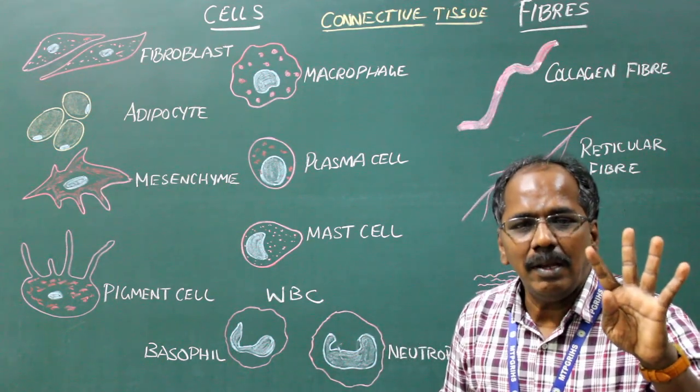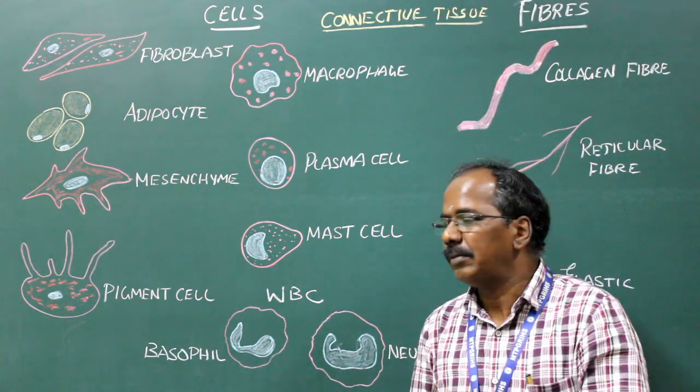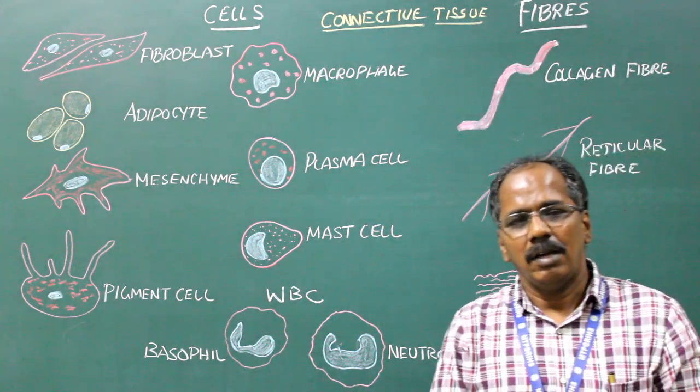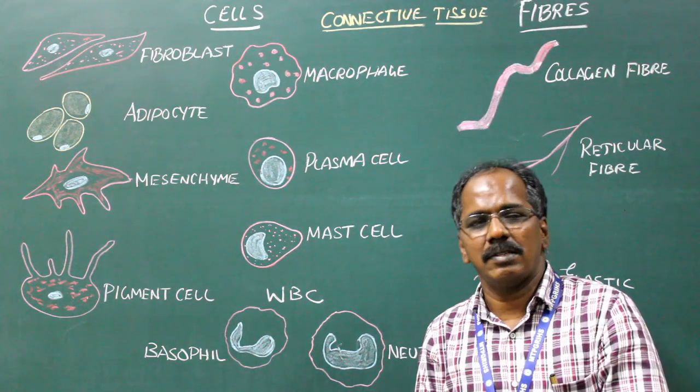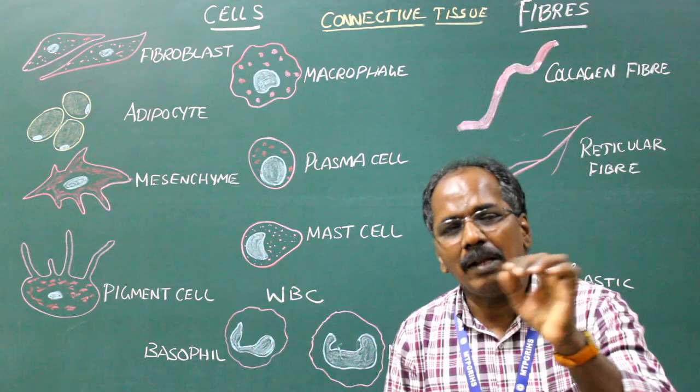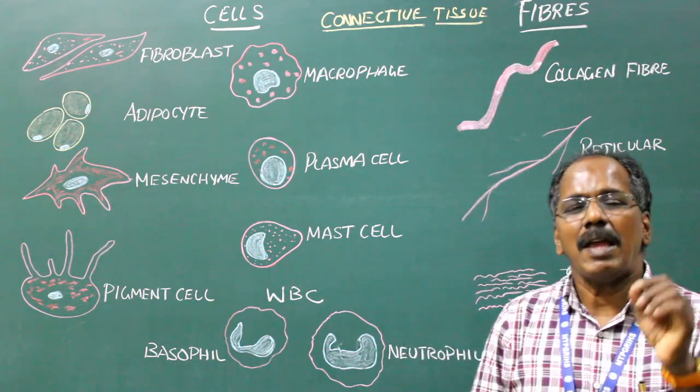Plasma cell: It is one type of B lymphocytes which produce immunoglobulin, that is antibody.